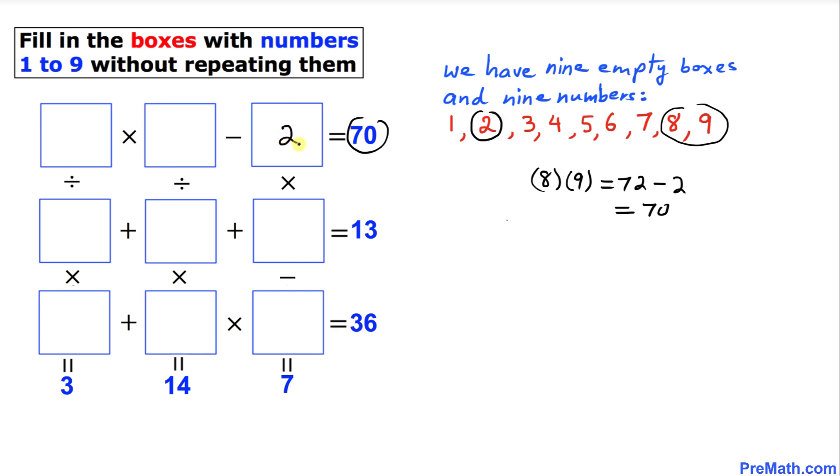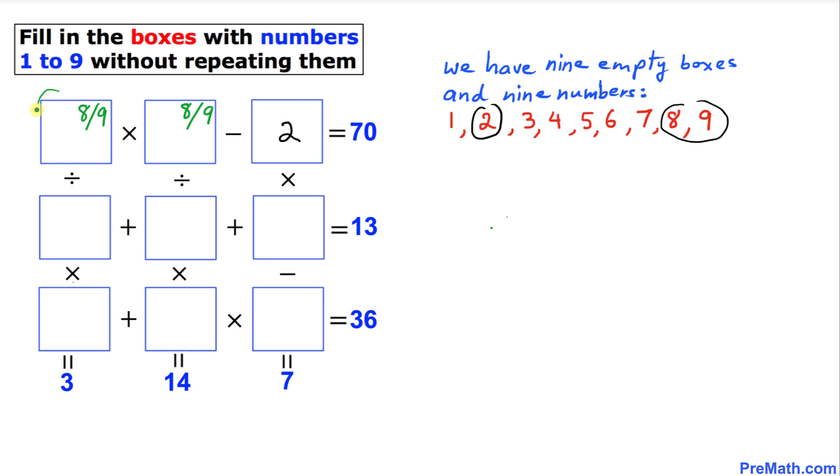Therefore, for sure we know that this number is 2. We are not sure which one of these boxes is going to have 8 or 9, so I'm going to put down 8 or 9. One of them is going to be in this one and the other is going to be 8 or 9 as well.